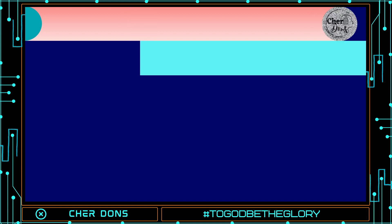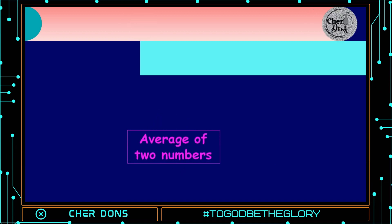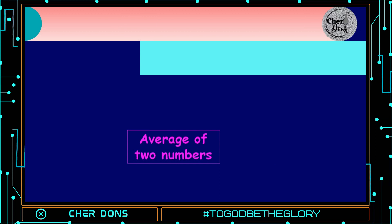The arithmetic mean between two numbers is sometimes called the average of two numbers. Let's have an example.